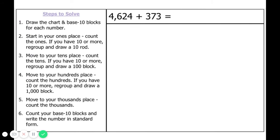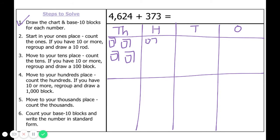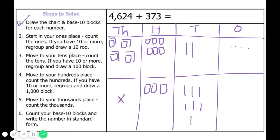Let's do another one. Here we have four thousand six hundred twenty-four plus three hundred seventy-three. Let's start by labeling our groups for our base ten blocks and drawing them. So I've got four thousands, six hundreds, two tens, and four ones. Then I have three hundred seventy-three: no thousands, three hundreds, seven tens, and three ones.